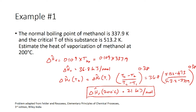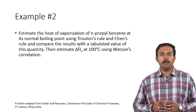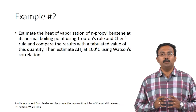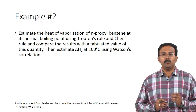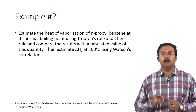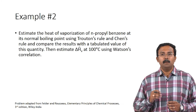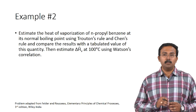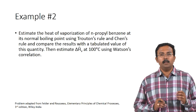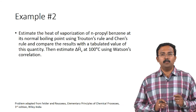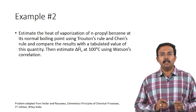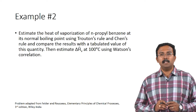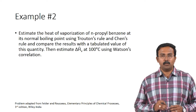Performing the calculations themselves is not too difficult. What is crucial is to identify which equations to use and apply them appropriately. In the next example we will estimate the heat of vaporization for N-propyl benzene at its normal boiling point using both Trouton's rule and Chen's equation, compare the results with tabulated values, and then estimate ΔHv at 100°C using Watson's correlation.